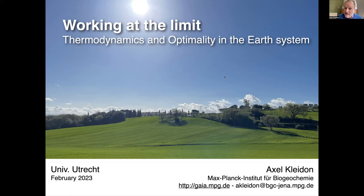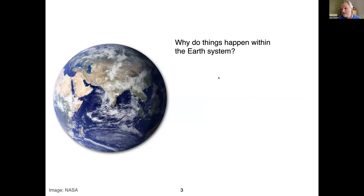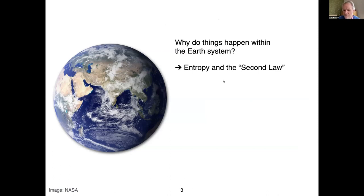I want to start with the common view of earth system science. This Bretton diagram captures it well — it's a complex system with lots of dynamics, lots of boxes, and they interact with arrows in both directions. Now, when you think about thermodynamics, there's something called the second law and that gives you one direction. It doesn't give you two directions. So why do things happen in the earth system? The longer you talk about it, sooner or later you say it must have something to do with the second law and entropy, because it gives you a direction.